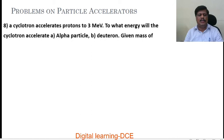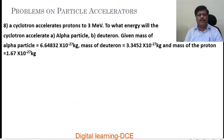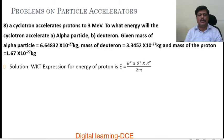Problem number 8. A cyclotron accelerates protons to 3 MeV. To what energy will the cyclotron accelerate: (A) an alpha particle, (B) a deuteron? Given: mass of alpha particle equals 6.64832 into 10 power minus 27 kg, mass of deuteron equals 3.3452 into 10 power minus 27 kg, and mass of proton is 1.67 into 10 power minus 27 kg.